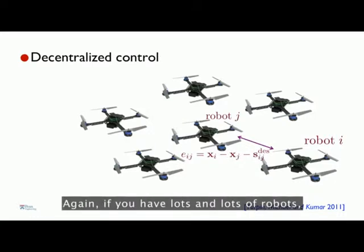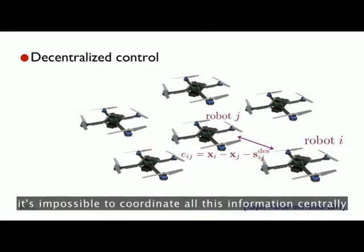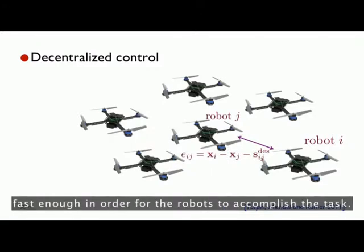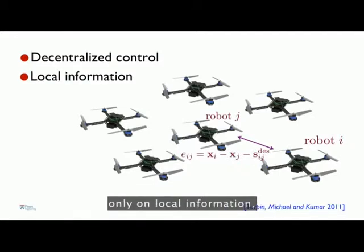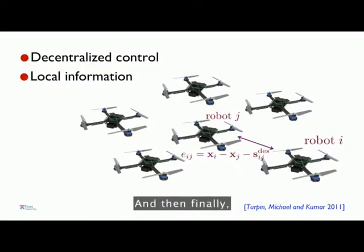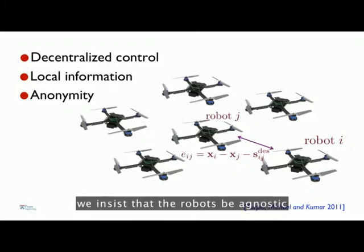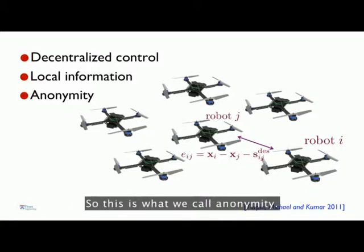This also has to be done in a decentralized way. If you have lots and lots of robots, it's impossible to coordinate all this information centrally fast enough for the robots to accomplish the task. The robots have to base their actions only on local information — what they sense from their neighbors. And we insist that the robots be agnostic to who their neighbors are. This is what we call anonymity.